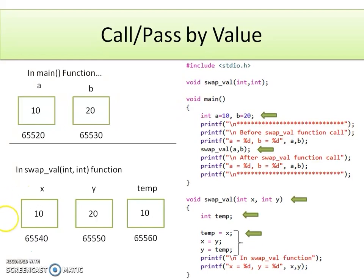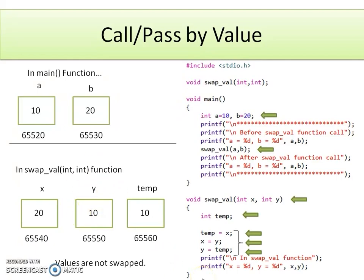After execution of the next statement, the value of y changes — previously it was 20, and after execution it becomes 10. After printing, we get the output of x and y as 20 and 10 respectively. But after returning back to the main function, there is no change in the content of variables a and b — they are still 10 and 20. So the values are not swapped at all.